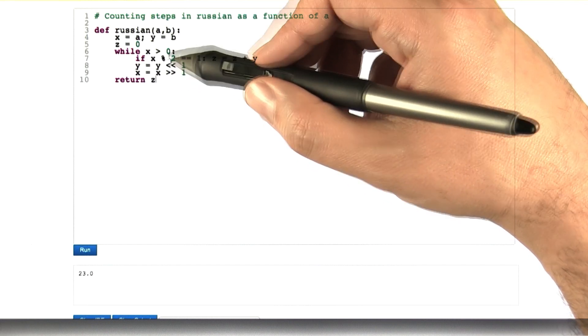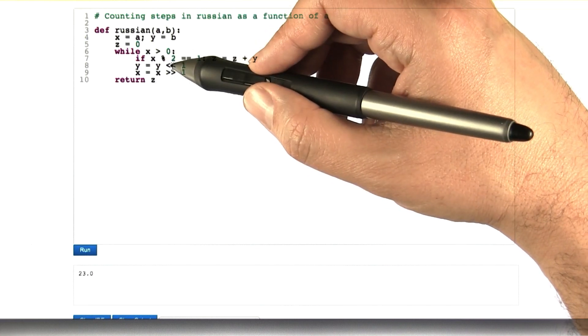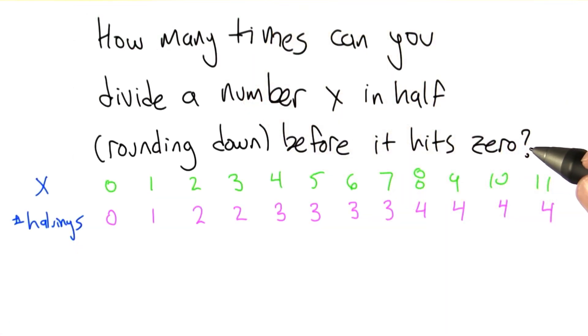This is again half and rounding down. So how many times can you divide x in half, rounding down, before you get down to 0? An important thing you need to know is how many times can you divide a number x in half, rounding down, before it hits 0?